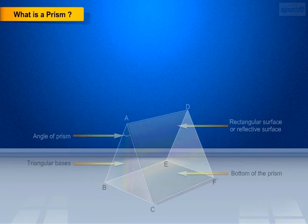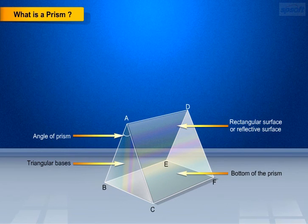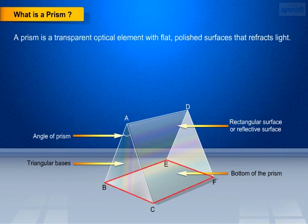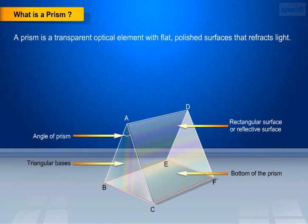Now our current topic is refraction of light through a prism. First let us know what is a prism. A prism is a transparent optical element with flat, polished surfaces that refracts light.